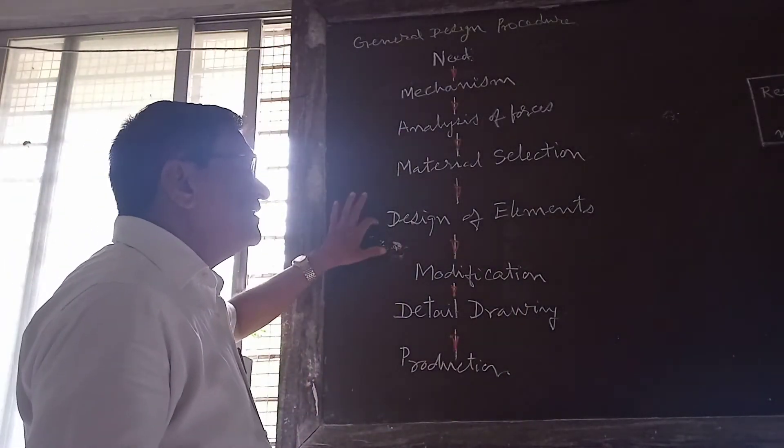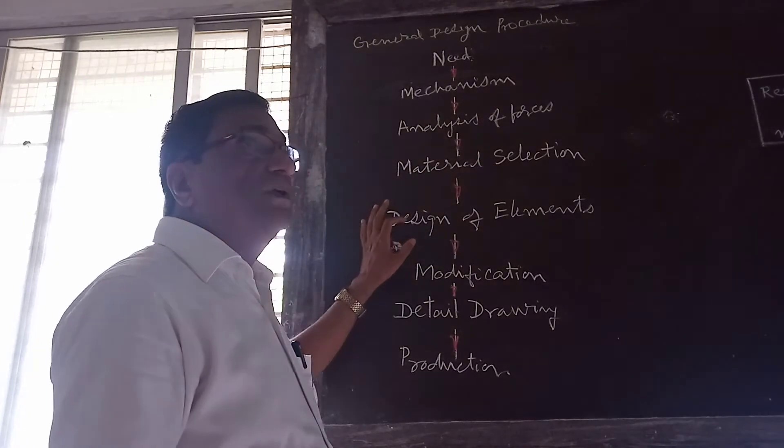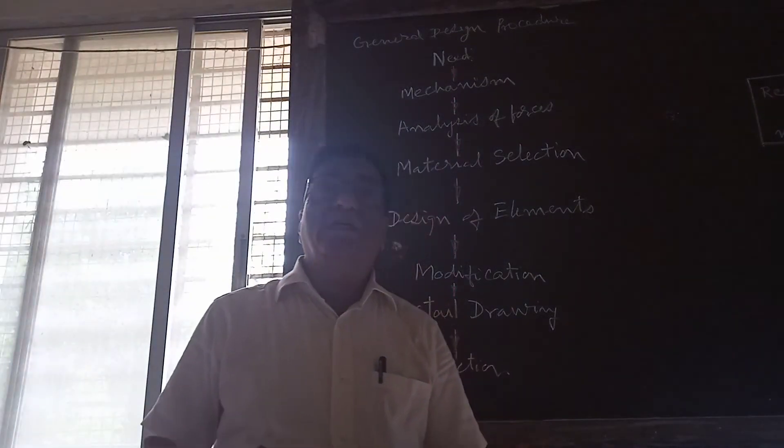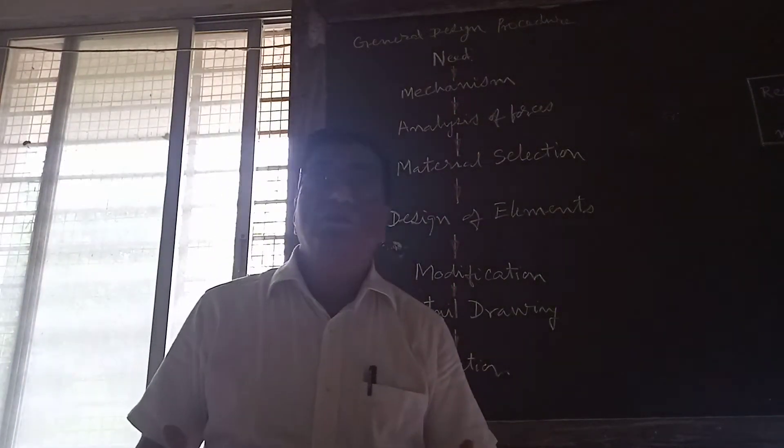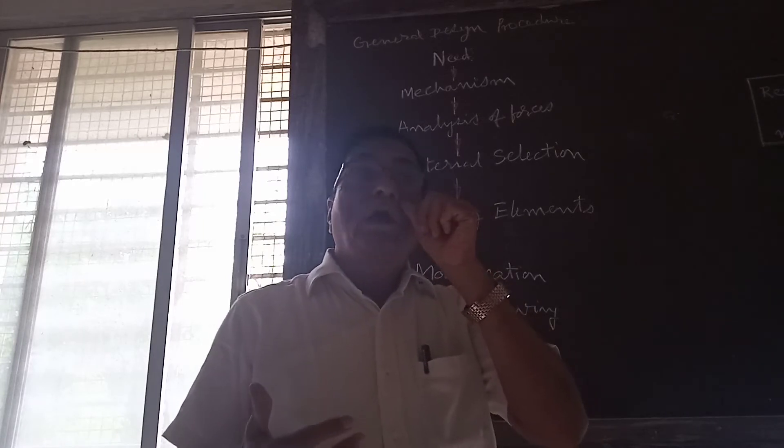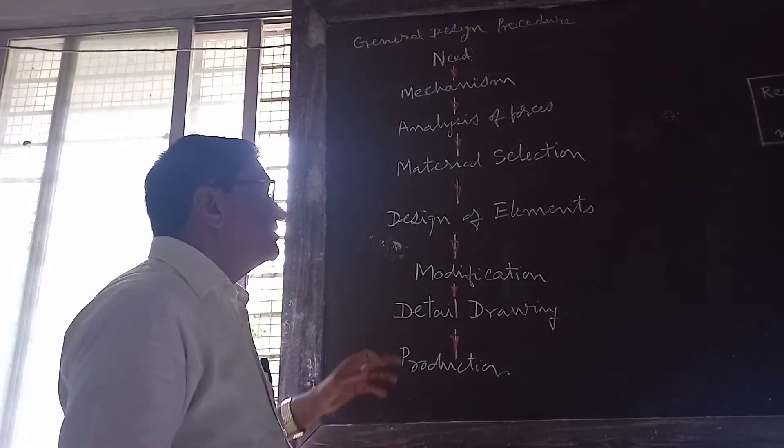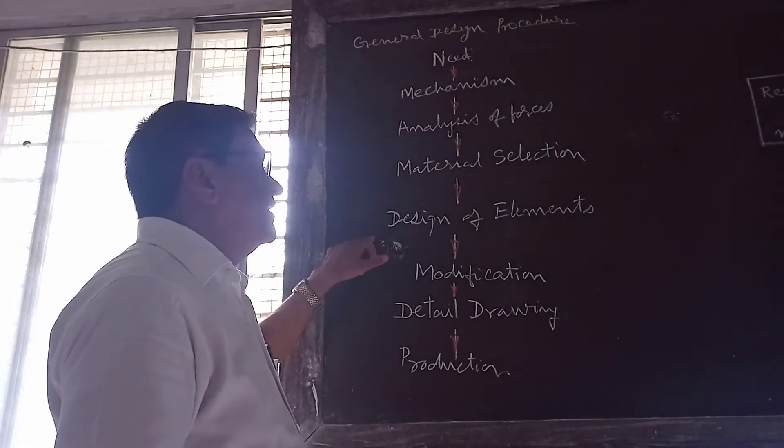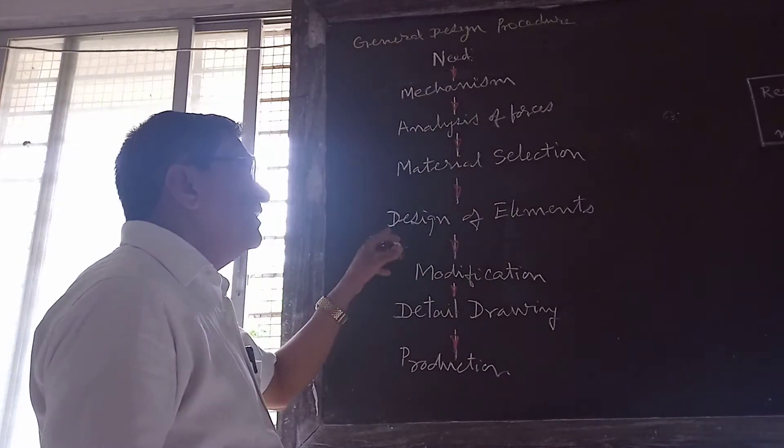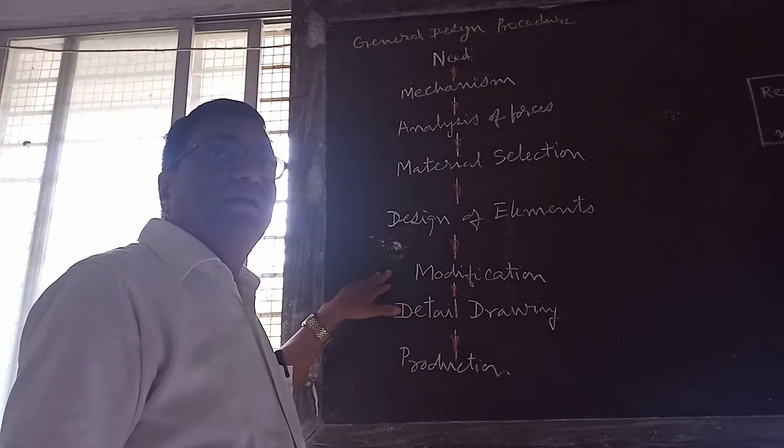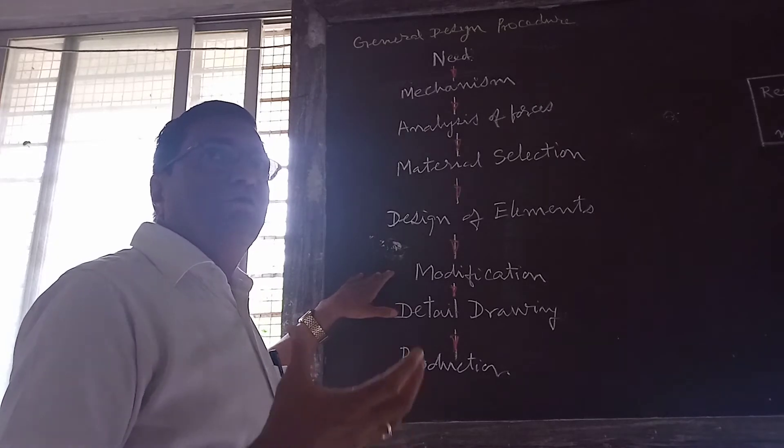So we finalize the dimensions or design the components on the basis of empirical relations or on the basis of theories of failure or rational design using the strength of material equations. Then we modify whatever dimensions we have found out.